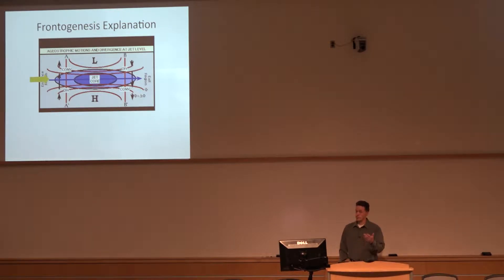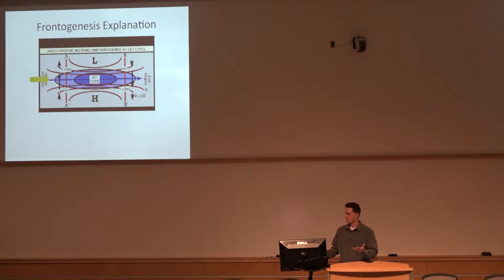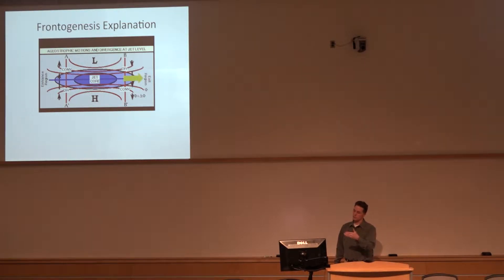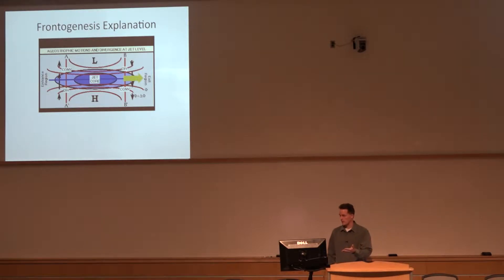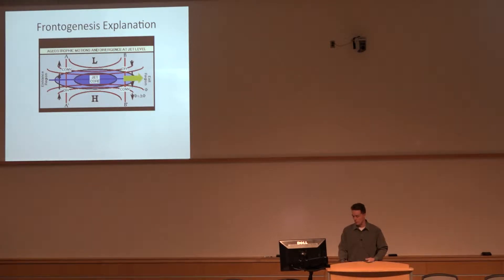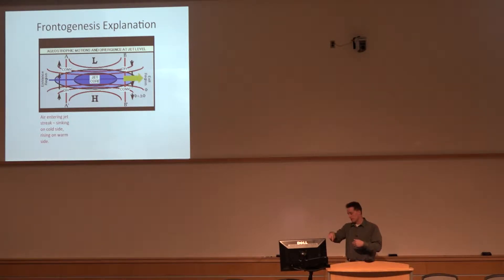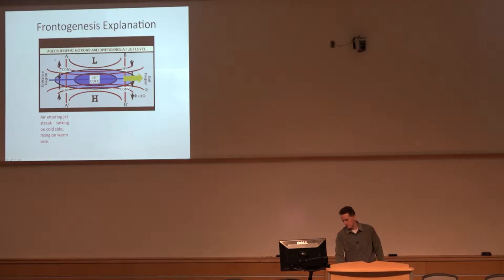We can illustrate this with a jet streak. This is the frontogenesis explanation for the vertical motion you get with a straight jet streak — a pretty unrealistic one since you don't see many straight jet streaks. As you're coming toward the jet core, you're encountering a stronger gradient in temperature — from the parcel's perspective that's frontogenesis. As you exit the jet core, you're encountering a weaker thermal gradient — that's frontolysis. The response of the atmosphere as the parcel moves in is to offset the frontogenesis through vertical motion: cooling on the warm side, which is the right entrance region of the jet core. So there would be ascent in the right entrance region and descent in the left entrance region.